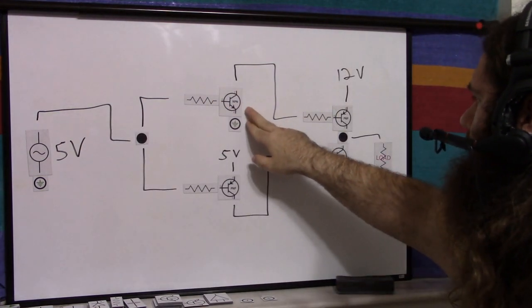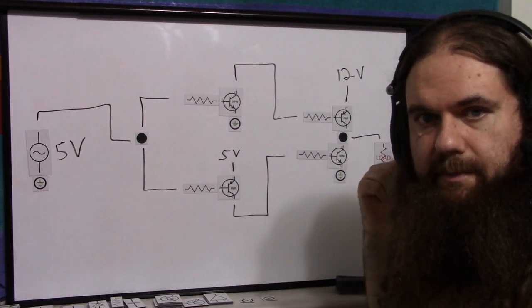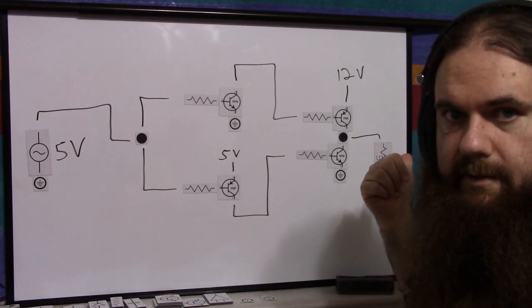Because a high square wave is going to turn on this, which is going to turn on this, so a high square wave is going to put out high square wave here, non-inverting.